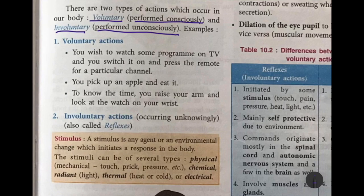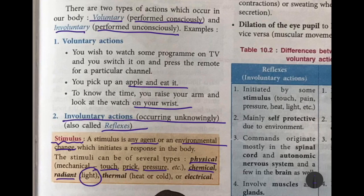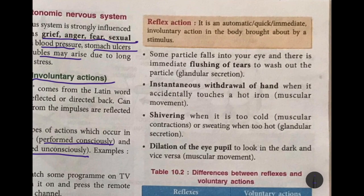Other examples of voluntary actions include picking up and eating an apple, and raising your arm to look at your watch. Involuntary actions that occur unknowingly are known as reflexes. A stimulus is any agent or environmental change that initiates a response in the body. Stimuli can be of several types: physical like touch, prick, or pressure; chemical; radiant like light; thermal like heat or cold; or electrical.